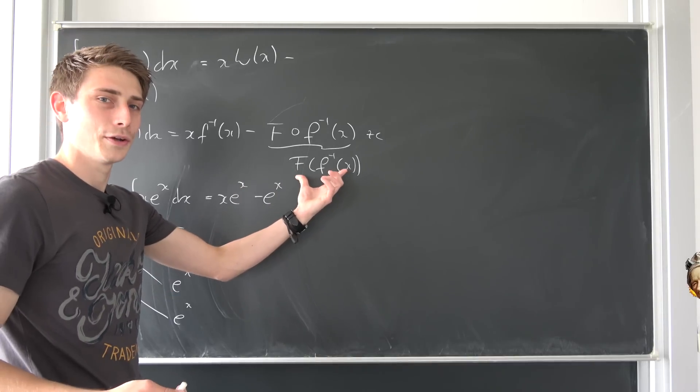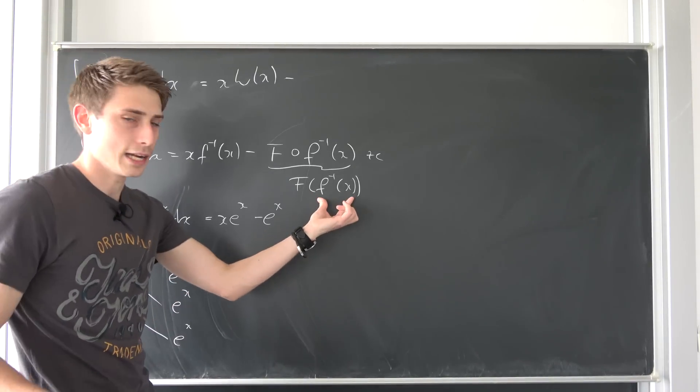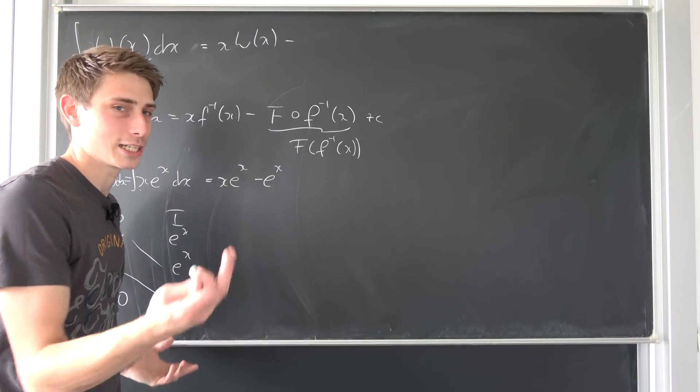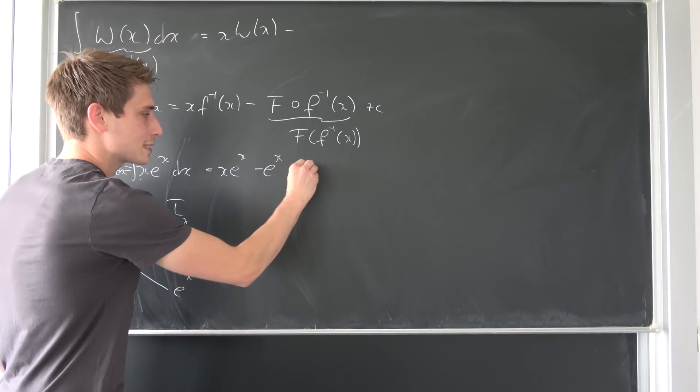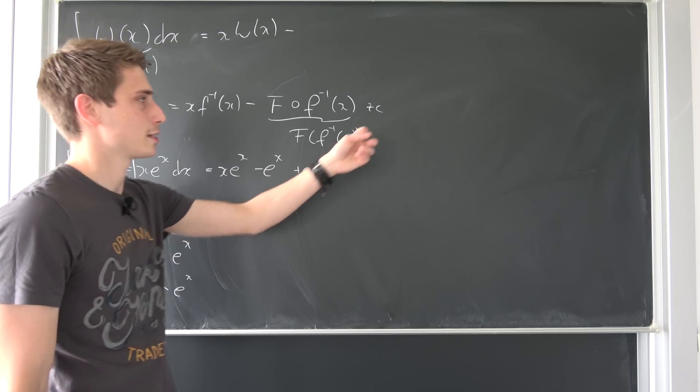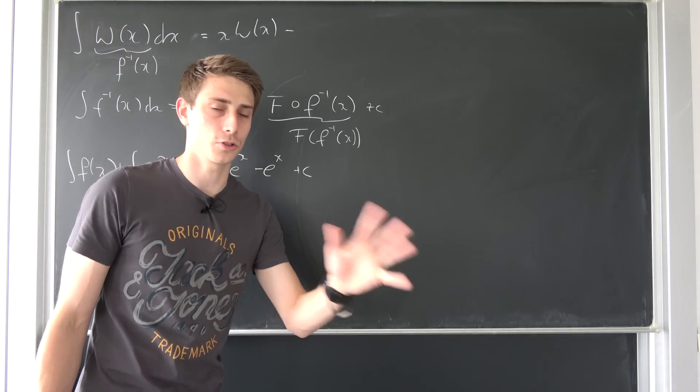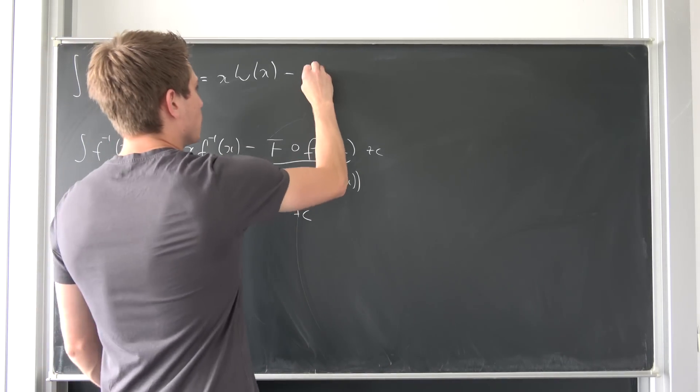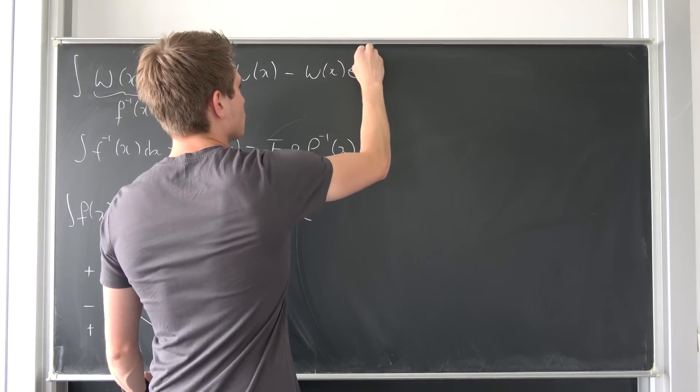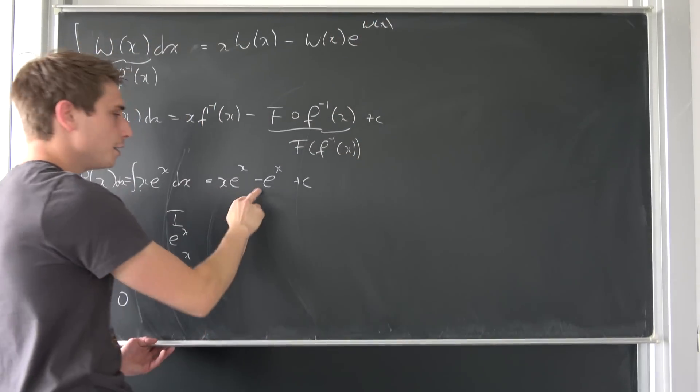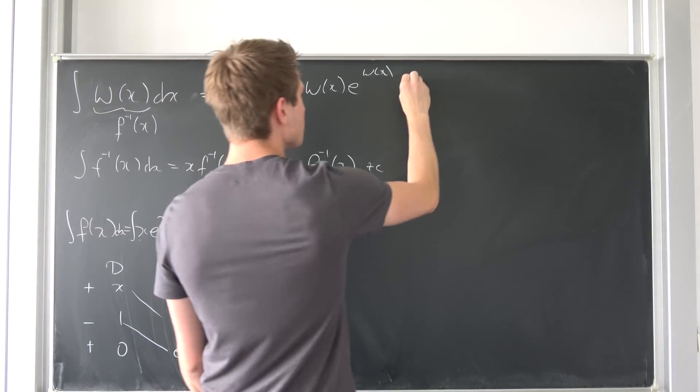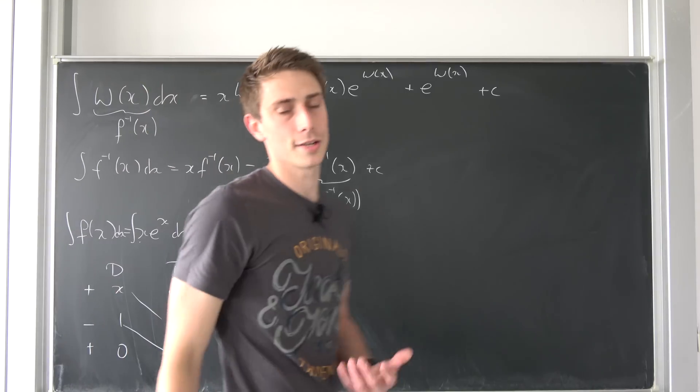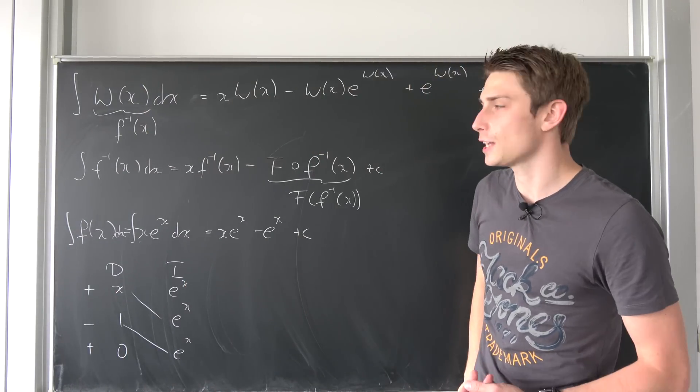So all that this thing is really saying is that we should plug this in, this function Lambert of x, into all the x's in here. So that's all there is to it, and don't forget your plus c. But we can just add this c to this c and it's going to give us a new constant. So what this thing means is that we end up with Lambert of x times e to the Lambert of x. Negative and negative becomes positive, so positive e to the Lambert of x plus some arbitrary constant c.